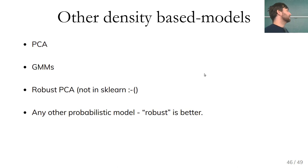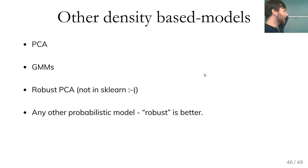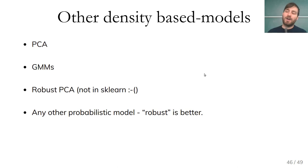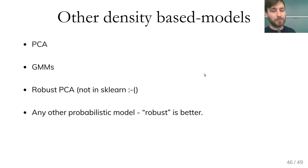Some other density-based models: PCA and GMMs are not robust, so if your training data is contaminated they'll be biased. Robust PCA — not in scikit-learn but many Python implementations exist — finds principal components while disregarding outliers; this is what Netflix used for fraudulent transaction detection. Generally you can use any probabilistic model, but if training data is contaminated, prefer a robust model.